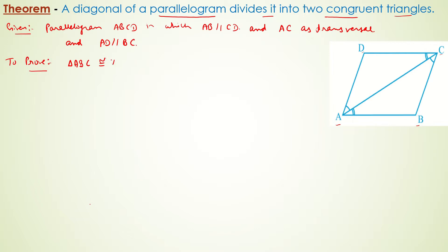We have to prove that triangle ABC is congruent to triangle ADC. To prove this, we will consider triangle ABC and triangle ADC, and by examining the figure carefully we can identify two pairs of alternate interior angles.